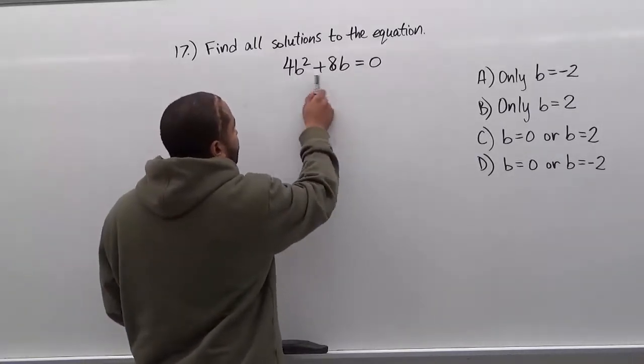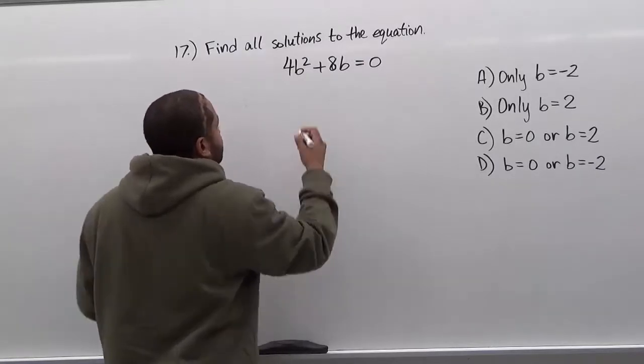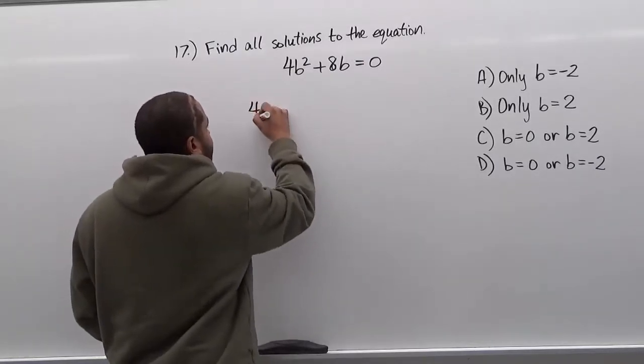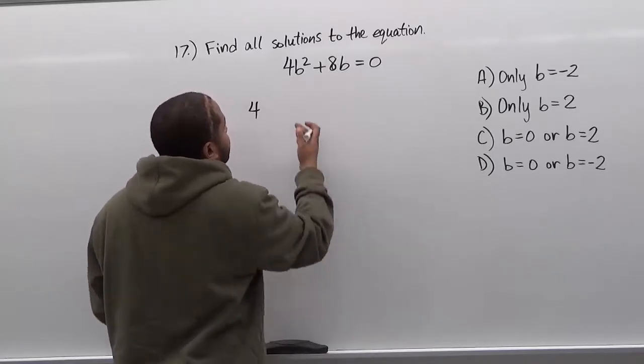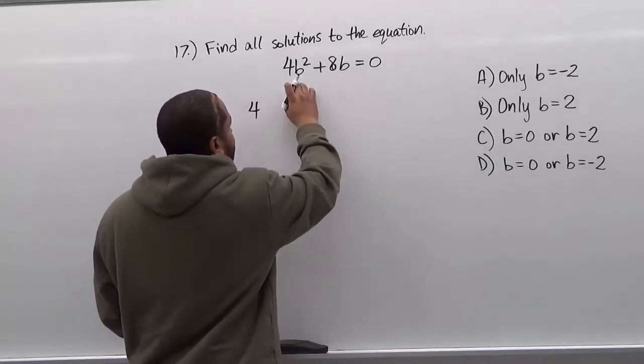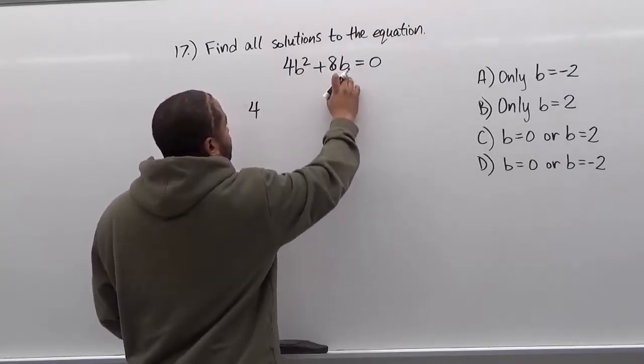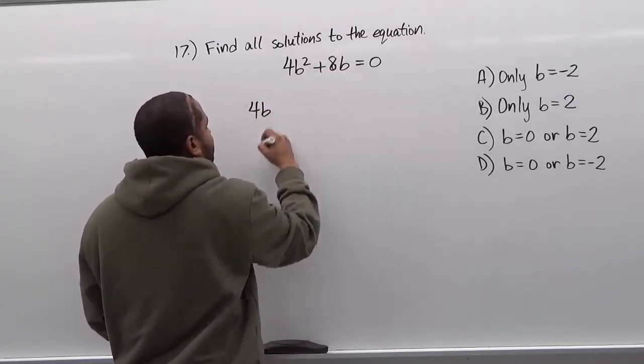Now first we take a look at the numbers. 4 and 8 have a common factor of 4, so we're going to factor out that 4. And we also notice that they both have a variable b. One is squared, one is not squared. So we take the lowest power of the two variables, which is the 1. So we're going to factor out just a single b.